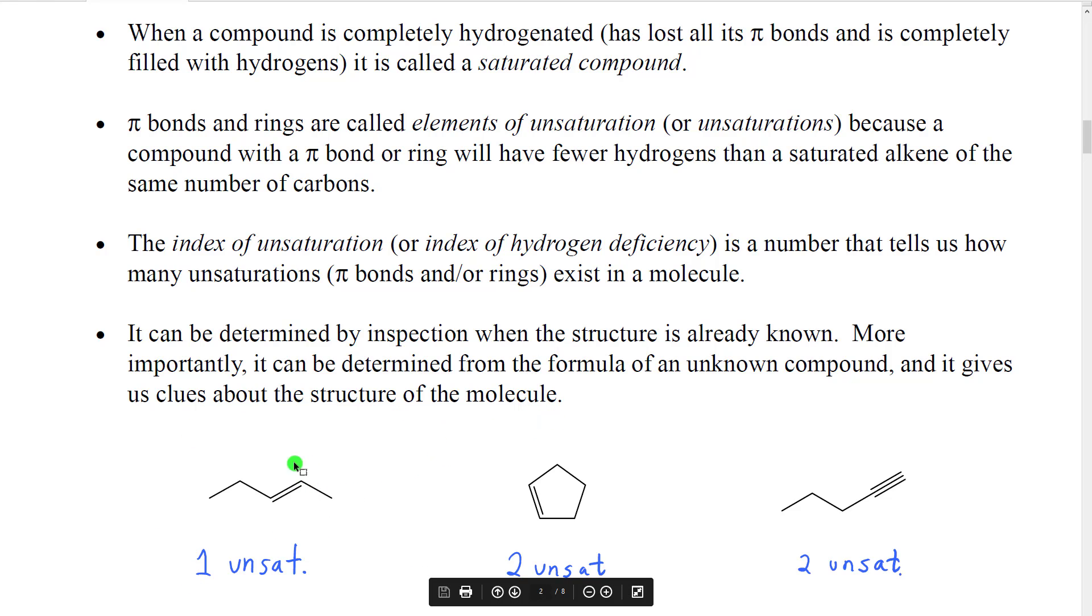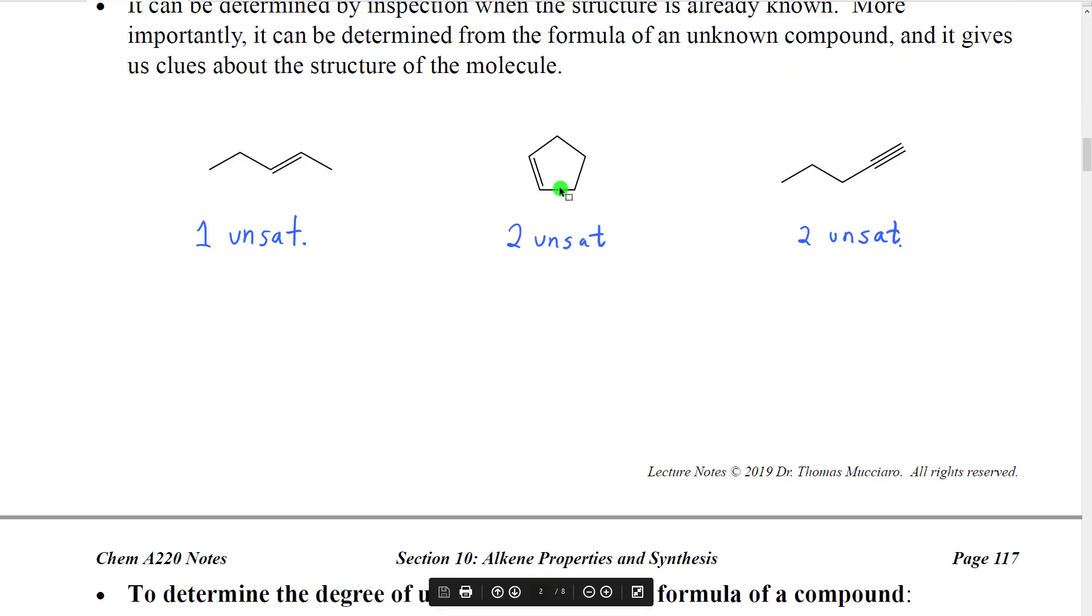So look at these examples. Here's a molecule that has one carbon-carbon double bond. We would therefore say that that has one unsaturation. This molecule has a ring, which would be one unsaturation, and a carbon-carbon double bond, which would be a second unsaturation. So we would say a total of two unsaturations. This molecule has two perpendicular pi bonds, as we saw when we looked at these in our chapter on bonding. So each of these pi bonds could absorb a hydrogen molecule. So therefore, one triple bond adds up to two unsaturations.